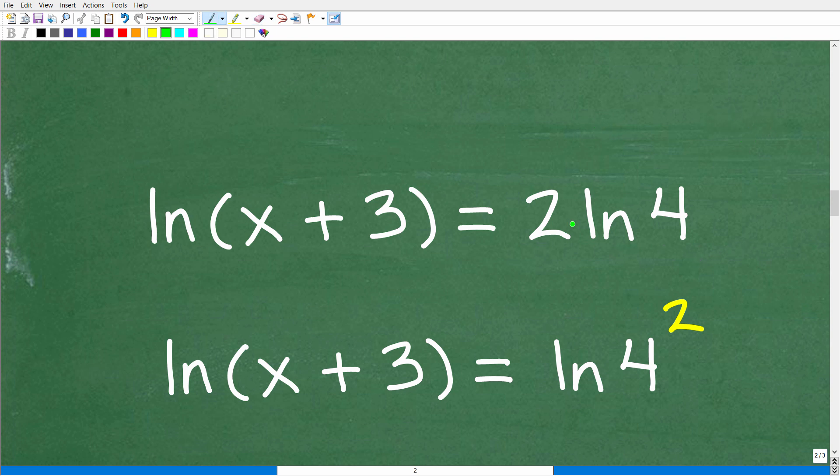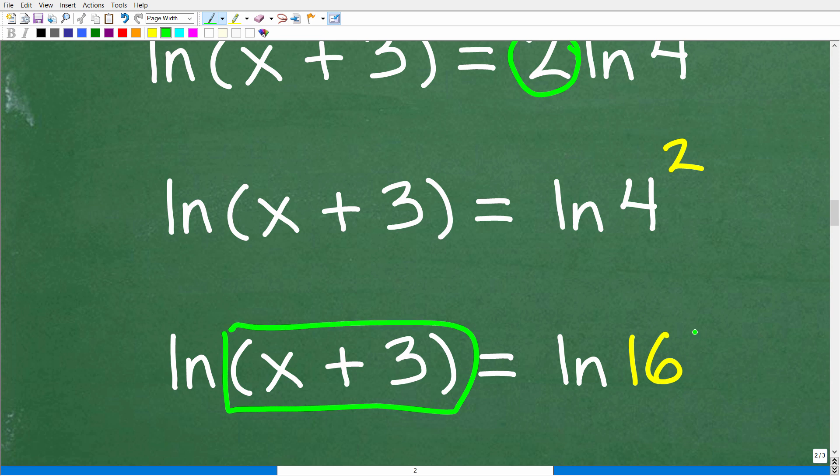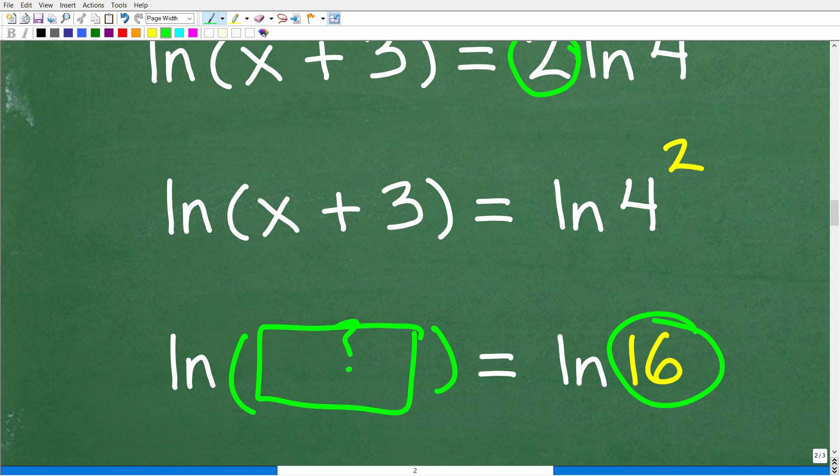This is going to come in super handy in this expression right here because 2 ln 4 is what? This is an exponent, and I can put it back up here where it dropped down. I can use that property to put this exponent of 2 on top of this 4. So really, 2 ln 4 is the same thing as ln 4 squared. This is going to be really helpful because 4 squared is 16. Hopefully all of you are starting to see where this is going. If you haven't figured this out, let me give you a big clue. ln of this thing right here is equal to ln of 16.